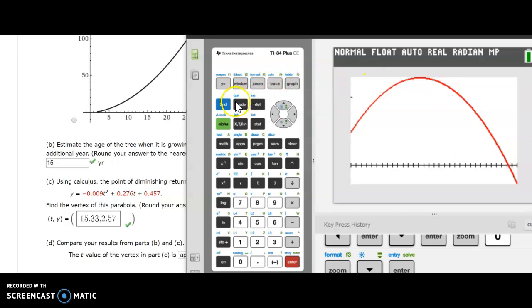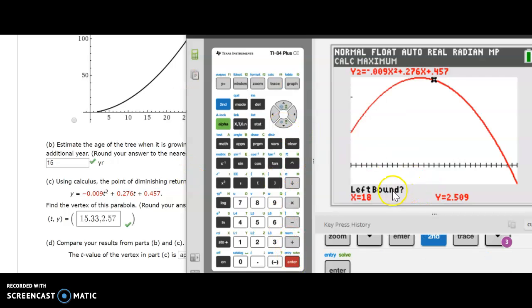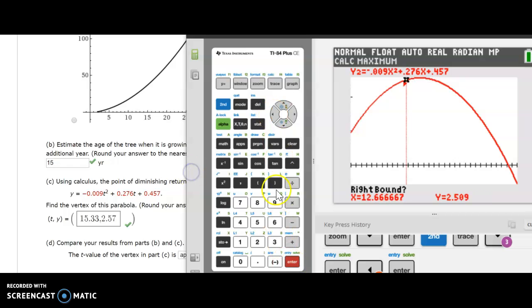And I need to estimate the vertex of that parabola. I'm going to go ahead and do it on my calculator. So let's use second calc, and let's choose the max feature. So it's asking me for a left bound, so I need to move the cursor to the left side of the vertex. It asks me for a right bound, so I'm going to move the cursor to the right side of the vertex. And when it says guess, I'm going to press enter.